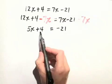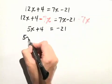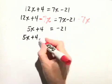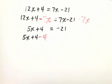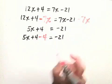Next, we'll move the constant term 4 to the right-hand side by subtracting 4 from both sides. 5x plus 4 minus 4 is equal to negative 21, again minus 4.